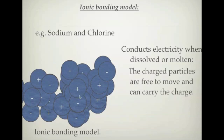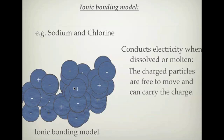When ionic compounds are dissolved or molten, the free-moving charged particles allow electricity to pass through. A charge comes in on one side and is carried through by the free-moving cations and anions. This is different from metallic bonding, where delocalized electrons carry the charge. In ionic bonding there are no delocalized electrons — it's the cations and anions themselves that move and carry the charge.